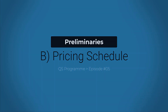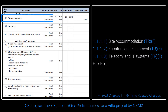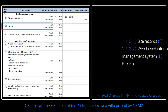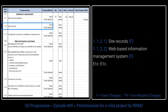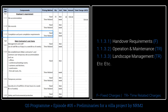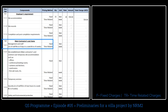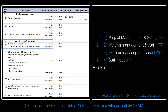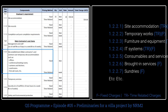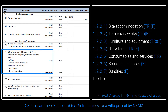The pricing schedule is divided into two major parts: preliminaries requirement and main contractor cost items. The first item is site accommodation, which includes furniture, equipment, telecommunication, and IT systems — with fixed and time-related charges. The second is site records, which includes a web-based information management system. The third is completion and post-completion requirements. Management and staff also have fixed and time-related costs.